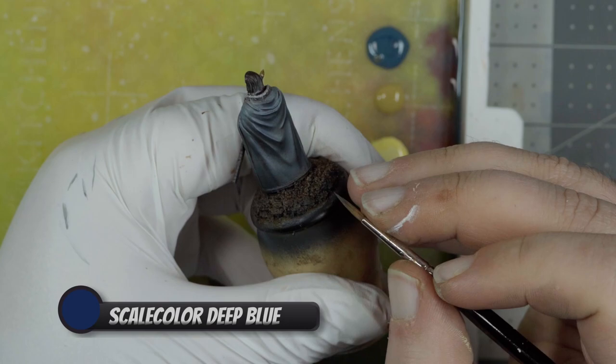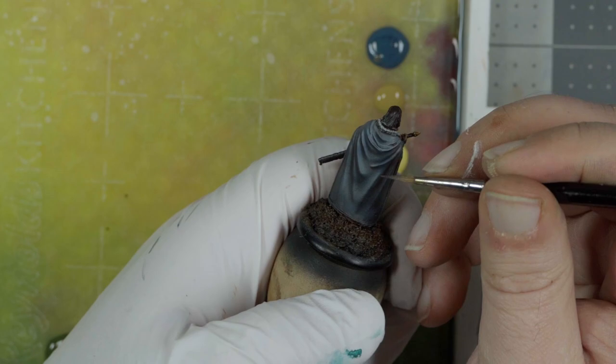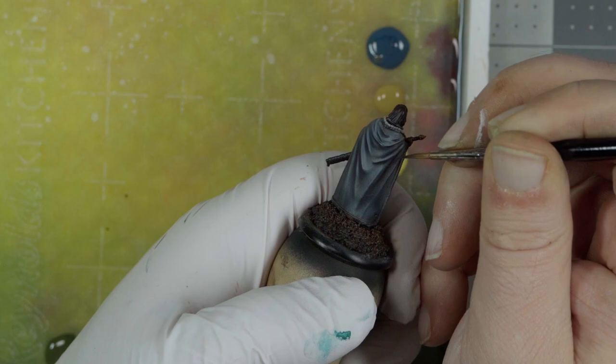First, I'm going to glaze some Scale Color Deep Blue into the shadows. The oil wash kind of blended that panes gray in a little bit with our Space Wolves gray, and I just want to reinforce those shadows, really make them saturated and deep to set them off from the rest of the folds of the cloak.